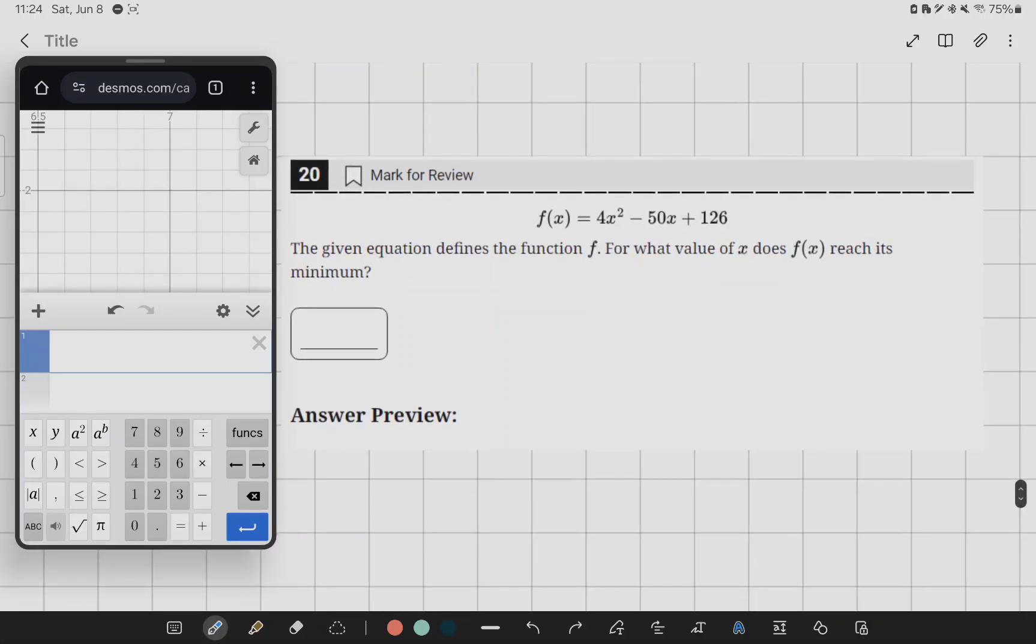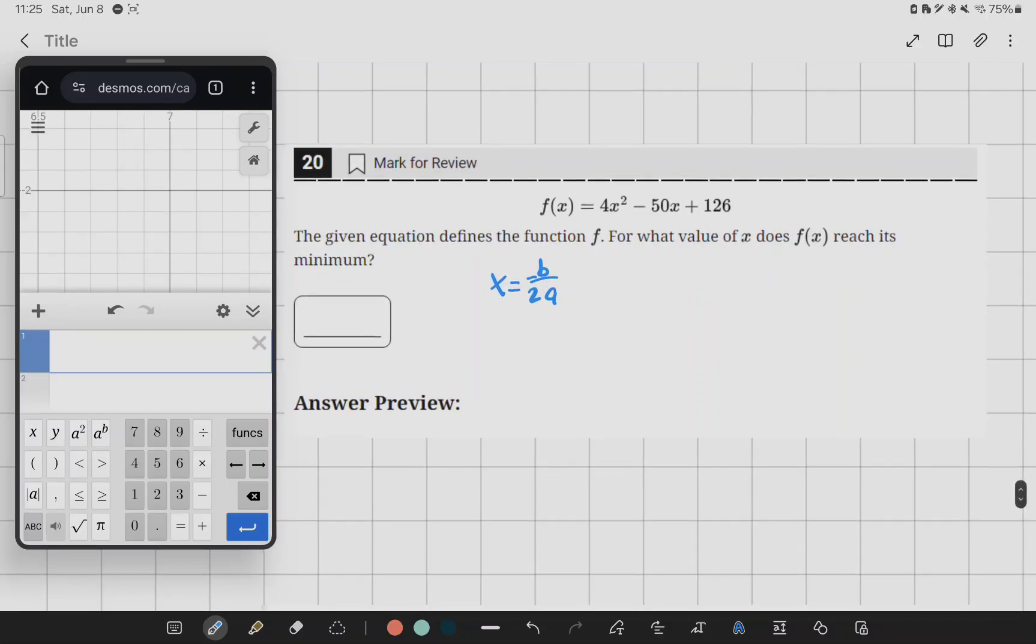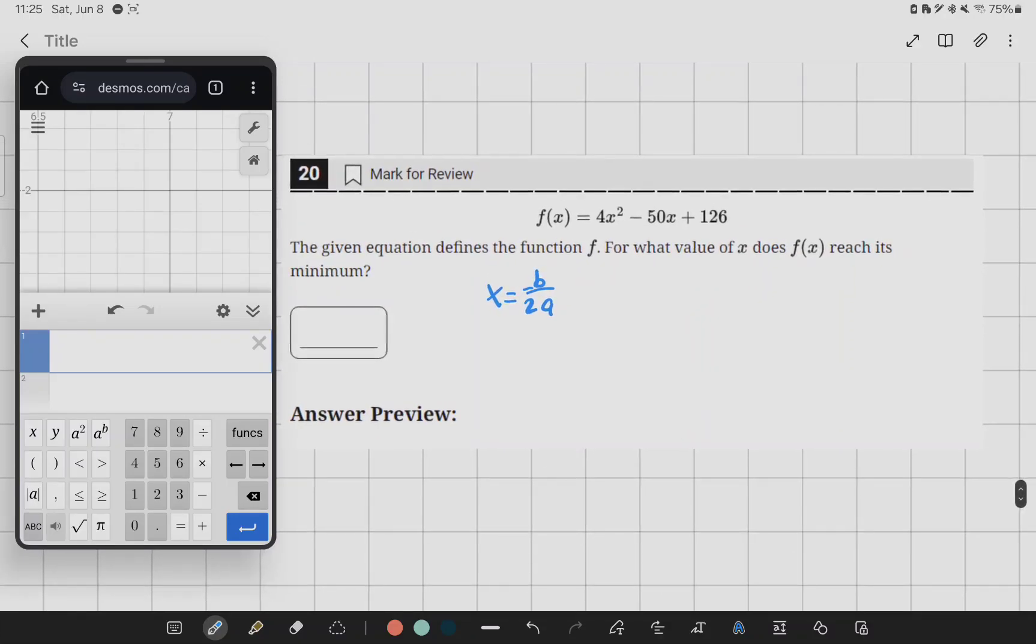So since we're looking at the maximum, what we can use is the handy x equals negative b over 2a equation to find the maximum or minimum of an equation.